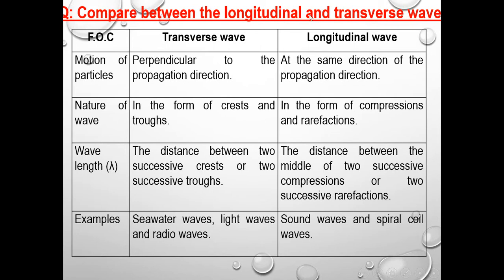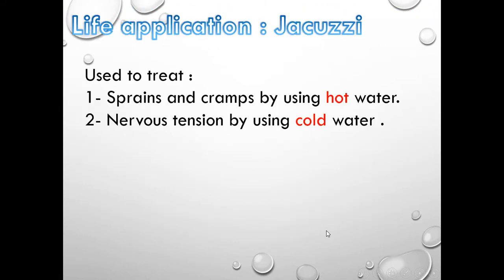Here we have an important comparison between transverse and longitudinal waves. For motion of particles: transverse waves vibrate perpendicular to the direction of propagation; longitudinal waves vibrate in the same direction. For nature: transverse waves consist of crests and troughs; longitudinal waves consist of compressions and rarefactions. Examples of transverse waves include sea water waves, light waves, and radio waves. Longitudinal waves include sound and spiral coil waves.